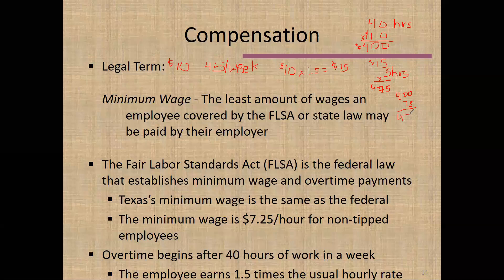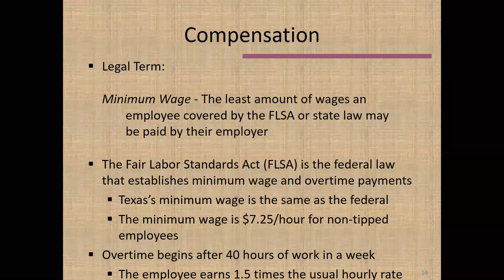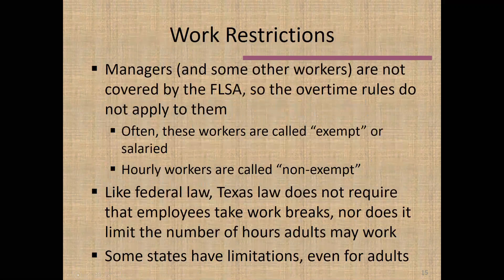Obviously, this is gross pay — there will be withholding from this, which we'll discuss shortly. The FLSA does not have anything to do with how many hours an adult can work, nor does it put any limitations on what the employer can require in terms of overtime hours. It simply establishes how overtime pay will be calculated. There are certain workers who are not covered by the FLSA — we call these exempt workers, meaning they are exempt from the requirements of the Fair Labor Standards Act.